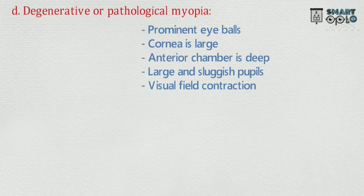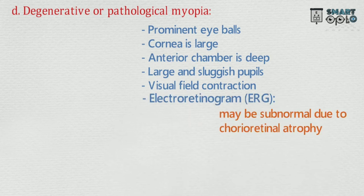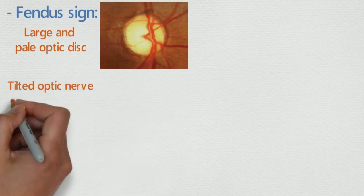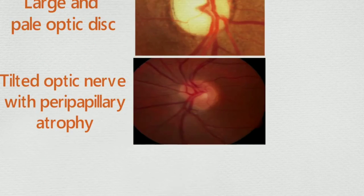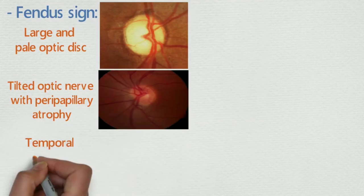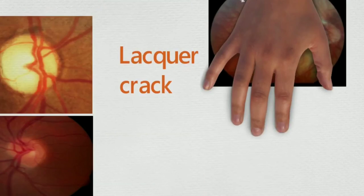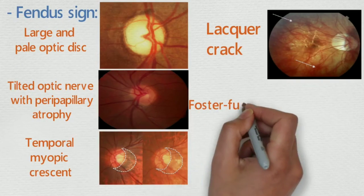D. Degenerative or pathological myopia — signs are: prominent eyeballs, large cornea, deep anterior chamber, large and sluggish pupil. Visual field contraction. Electroretinogram may be subnormal due to chorioretinal atrophy. Fundus signs include: large and pale optic disc, tilted optic nerve with peripapillary atrophy, temporal myopic crescent, lacquer cracks, and Foster-Fuchs spot.